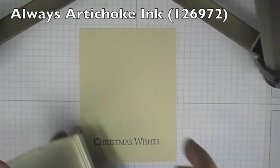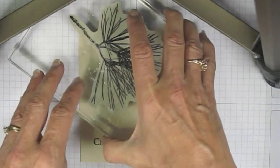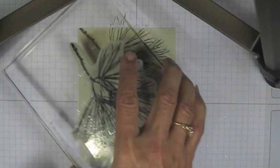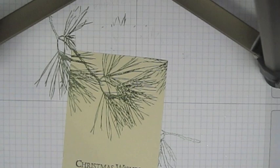Next I'll come in with Always Artichoke ink. I like the look of the Always Artichoke with the actual pine boughs. So I'll give myself one there, maybe some more here, in the corner, there. I'm happy with that.